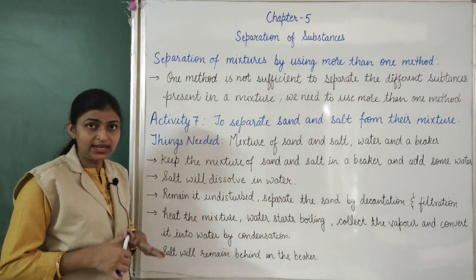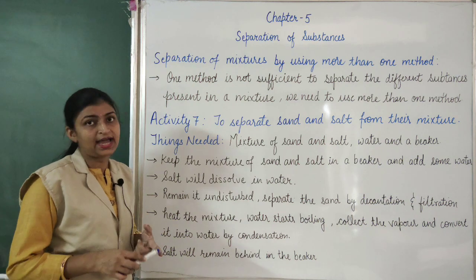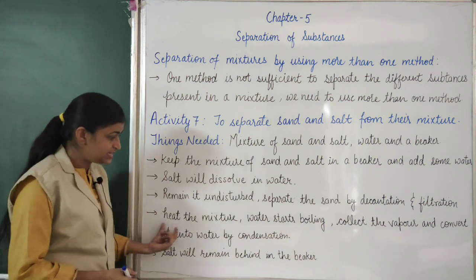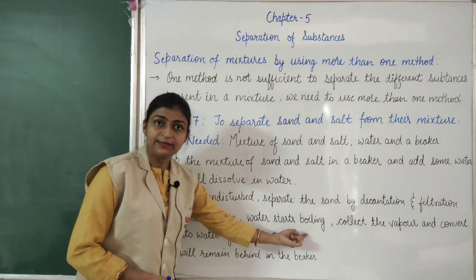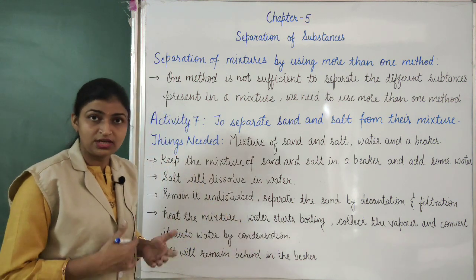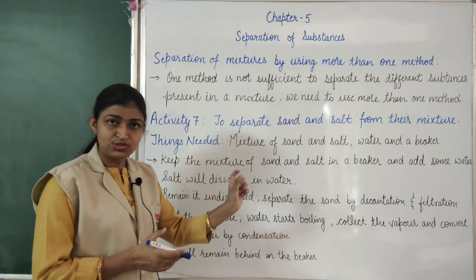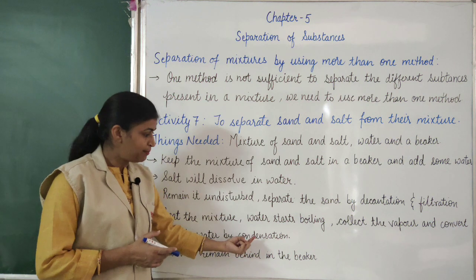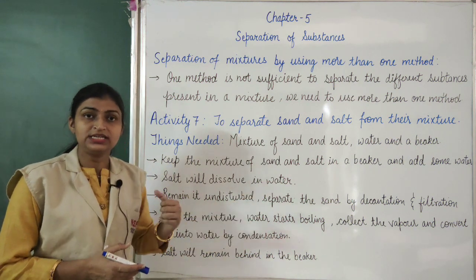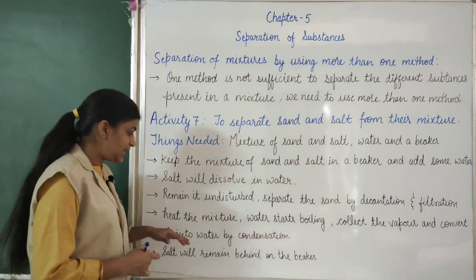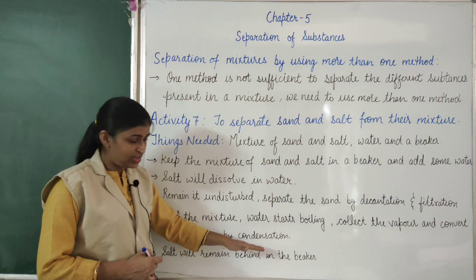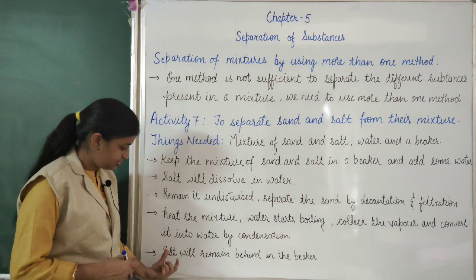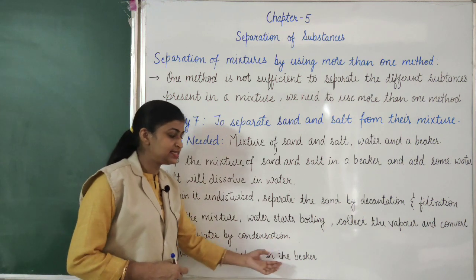Now we are left with a mixture of salt and water. To separate the salt from this water, we will heat the mixture. Then water starts boiling, which means water is converting into vapour. We will collect this vapour and convert it back into water by condensation — by cooling the vapour, we can get the water back. The salt will remain behind in the beaker.